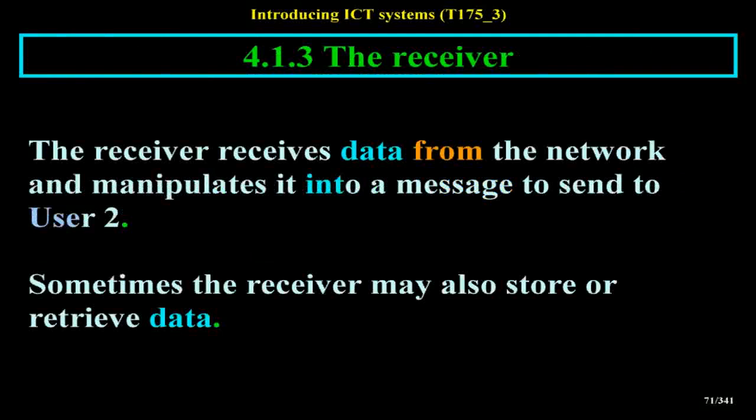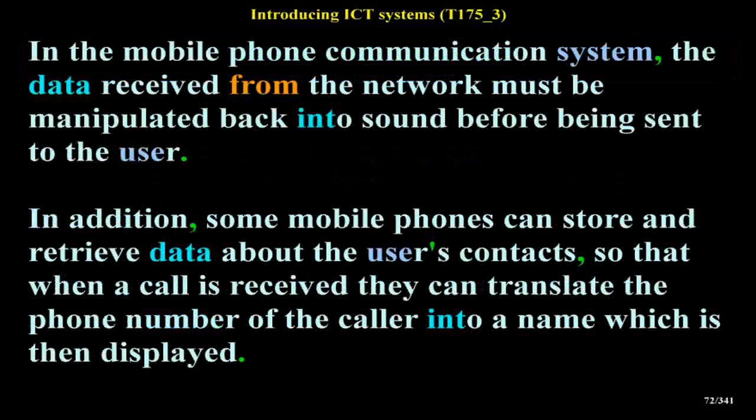The receiver receives data from the network and manipulates it into a message to send to user 2. Sometimes the receiver may also store or retrieve data. In the mobile phone communication system, the data received from the network must be manipulated back into sound before being sent to the user. Some mobile phones can store and retrieve data about the user's contacts, so that when a call is received they can translate the phone number of the caller into a name which is then displayed.